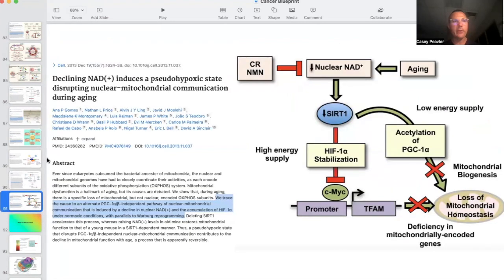And then the last pathway that we know about is the declining NAD nicotinamide adenine dinucleotide supply, which then leads to decreases in SIRT1 activity, which then stabilizes HIF and causes another form of pseudo-hypoxic state, which then leads to possible progression to the Warburg effect and metabolic reprogramming of cancer cells. So what this is saying is that we trace the cause to an alternate PGC1 alpha beta independent pathway of nuclear mitochondrial communication that is induced by a decline in nuclear NAD and the accumulation of HIF-1 alpha under normal oxygen conditions with parallels to Warburg reprogramming.